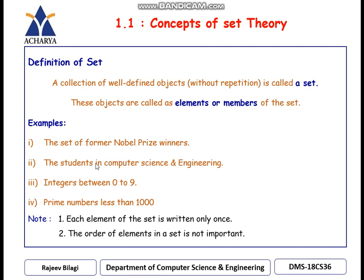I have written some different examples: the set of formal Nobel Prize winners; the set of the number of students in computer science and engineering; the integers between 0 to 9; and prime numbers less than 1000. There are two important points to remember: one, each element of the set is written only once — that is without repetition; and two, the order of elements in a given set is not important.